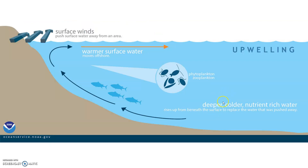To understand El Niño and La Niña, you really need to understand upwelling. Upwelling occurs when a surface wind pushes water off of coastal water. When it does that, it creates a little empty space, and then to fill that empty space, water rises up from below the surface — deep, deep down in the ocean.